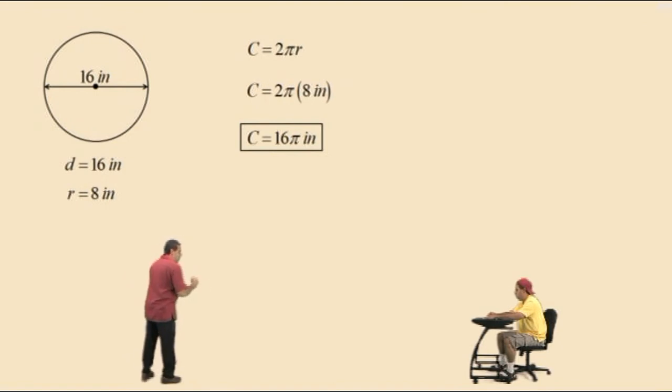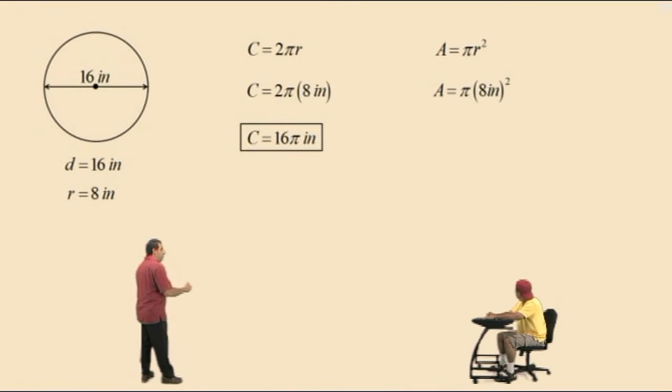Let's go to area of a circle, which is πr². We'll replace the radius with 8 inches. Charlie, what's 8 squared? 64. So our answer is not 64 inches squared. It's 64π, which means 64 times pi, and our units are 2 dimensions inches squared.